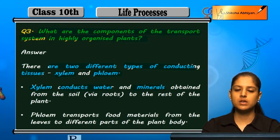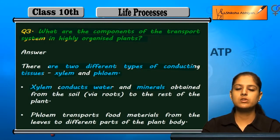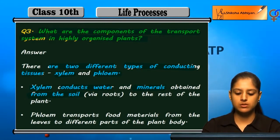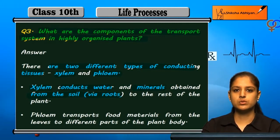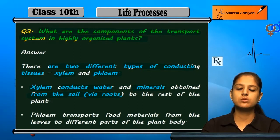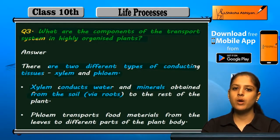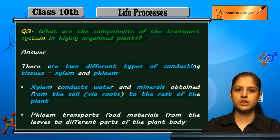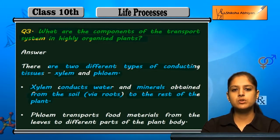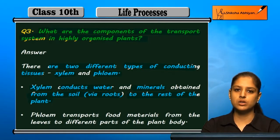Xylem conducts water and minerals in plants. So the job of xylem is to transport water and minerals which the plant obtains from the soil. The roots absorb water and minerals from the soil, and then xylem transports that water and minerals to all other parts of the plant.